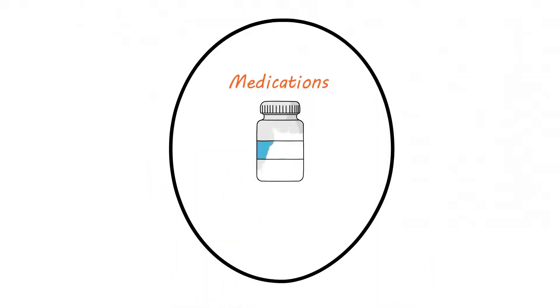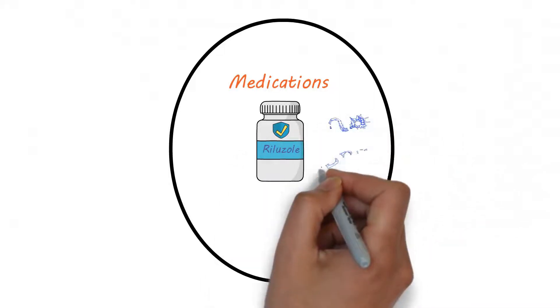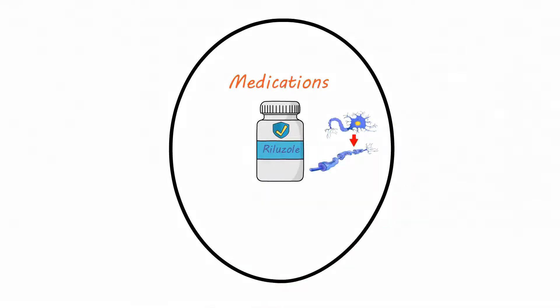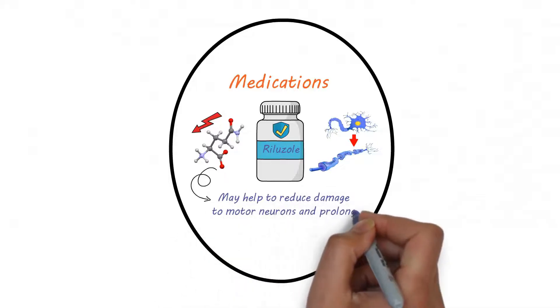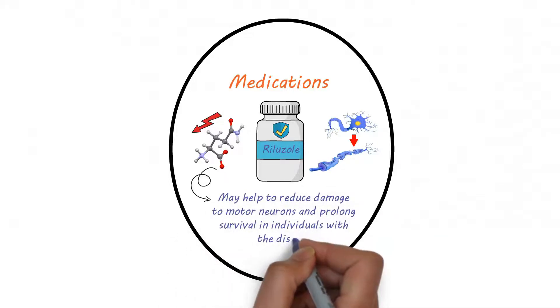Medications. Certain medications, such as Rilazole, have been approved by the FDA to slow the progression of motor neuron disease. This medication works by helping to reduce a certain chemical called glutamate which in turn may help to reduce damage to motor neurons and prolong survival in individuals with the disease.